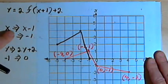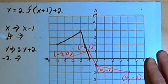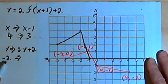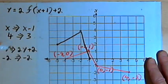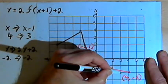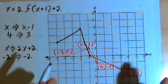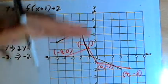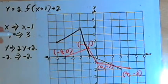The last point I have is at 4, negative 2. I want to take the x-coordinate, which is 4, and subtract 1, so that becomes 3. I want to take the y-coordinate, which is negative 2, multiply it by 2 — that's negative 4 — and then add 2, so it's going to be negative 2, just as it originally was. My last point is at 3, negative 2. I'll connect the last line, and here's my new graph. It shifted one unit to the left because of x plus 1, it's been stretched to twice the vertical height, and it's also been raised up 2 units.